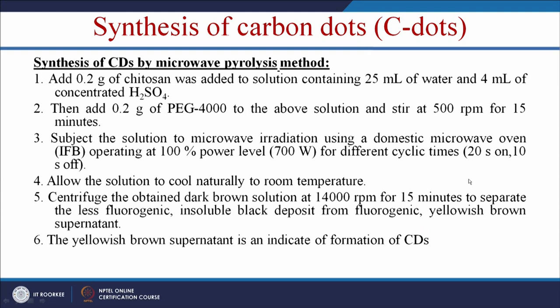This protocol was developed in our lab. Carbon dots are made by microwave pyrolysis method using 0.2 grams of chitosan as a carbon source, added to a solution containing 25 mL of water and 4 mL of concentrated sulfuric acid. Then 0.2 grams of polyethylene glycol 4000 is added, stirred at 500 rpm for 15 minutes, and subjected to microwave radiation using a domestic IFB microwave oven operating at 100% power (700 watts) for cyclic times of 20 seconds on and 10 seconds off. At the end of reaction, a dark brown color solution is obtained.